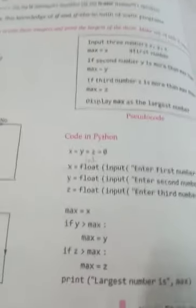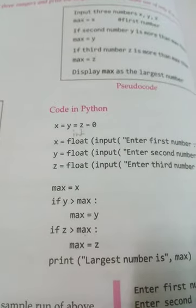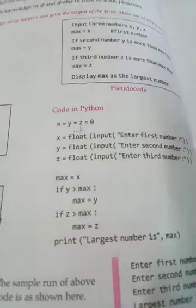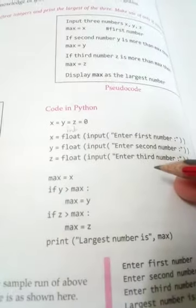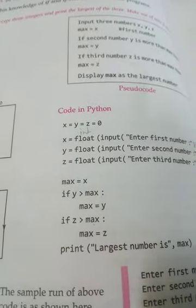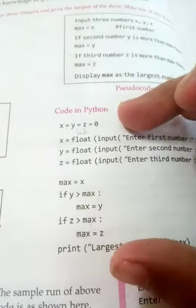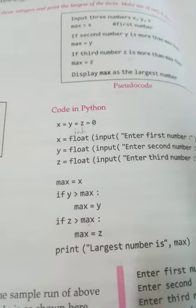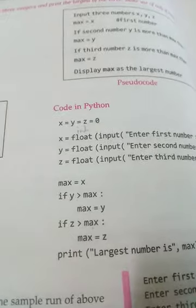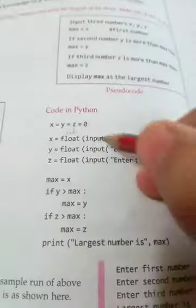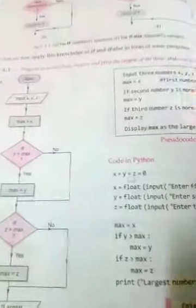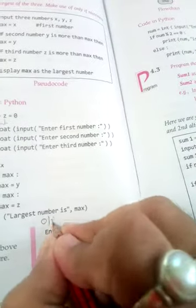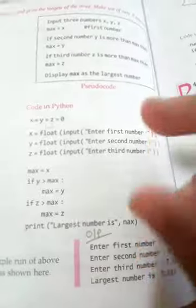One thing I want to share: no code is fixed for any kind of program. Writing programs is a very creative thing. The same program you can write in a different way using different statements. You have to understand the logic — your logic should be very clear. The number of lines can be different, but your logic should be correct. Write this code in your computer lab copy for question 4.1 — this is your Python code and this is your output. OP means output.